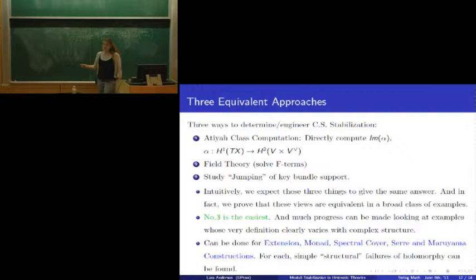This requires some proving, though, and the work that is about to appear is that we, in fact, prove in various classes of examples that there is structural jumping that can be isolated and proved to be equivalent to the Atiyah calculation. So, much progress can be made by looking at examples whose very definitions really vary with complex structure. In forthcoming work, we're going to describe how this can be done not just for extension bundles, as I've outlined here, but monads, spectral covers, and Hirzebruch constructions as well.